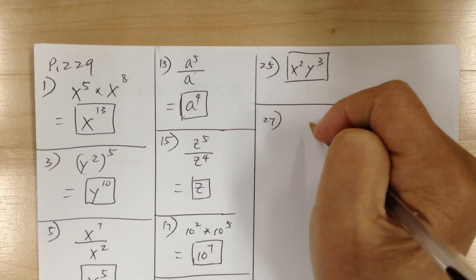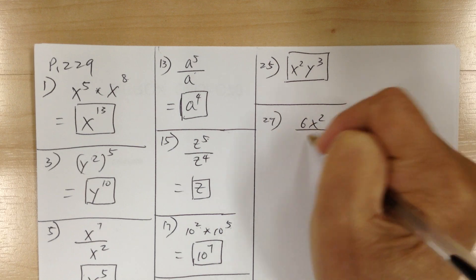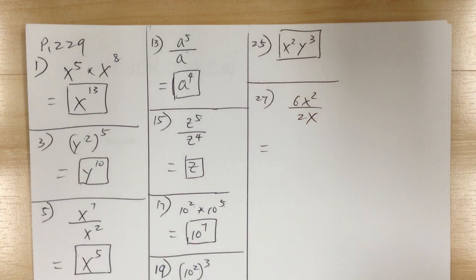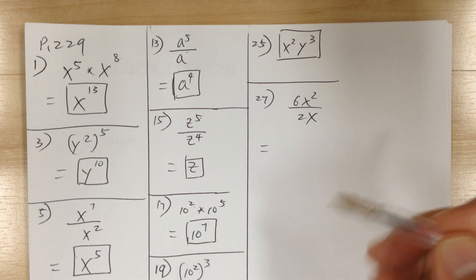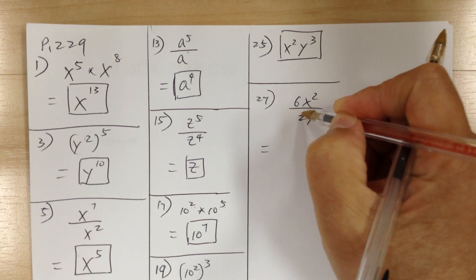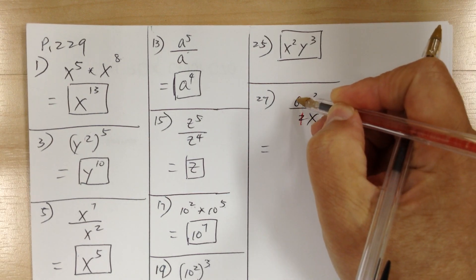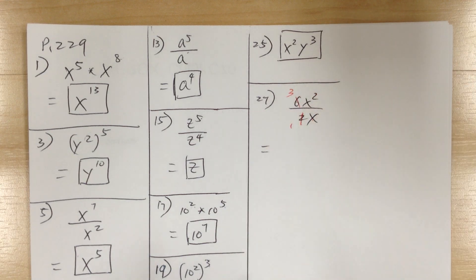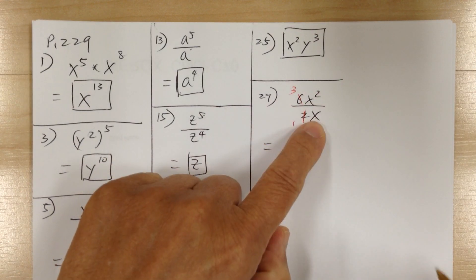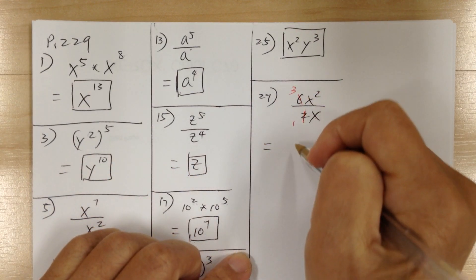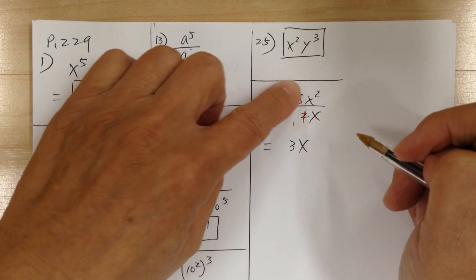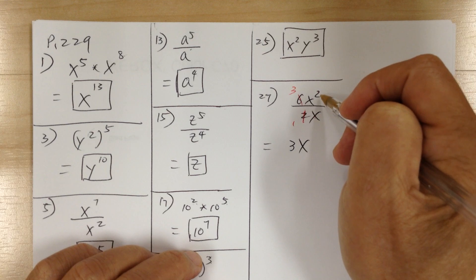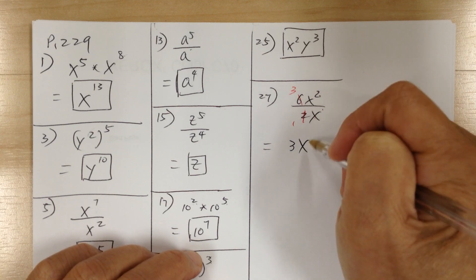Number 27, you have 6x squared over 2x. When you simplify, do the numbers and then the variables separately. 6 and 2 — divide by 2 — you get 3. And x squared over x is just x. So it ends up being 3x. Because 6 over 2 is 3, and x squared over x is x, since 2 minus 1 gives you 1.